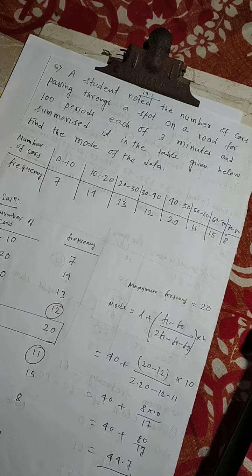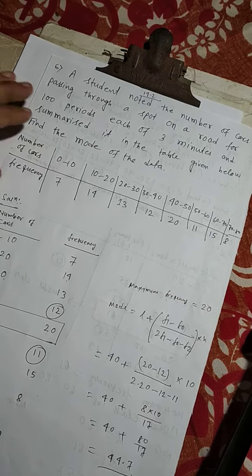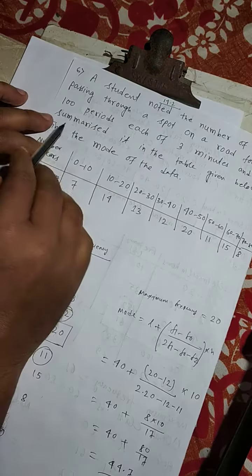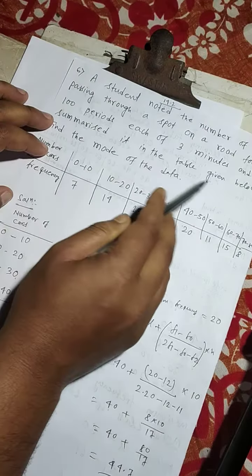the number of cars passing through a spot on a road for 100 periods each of 3 minutes and summarized it in the table given below.